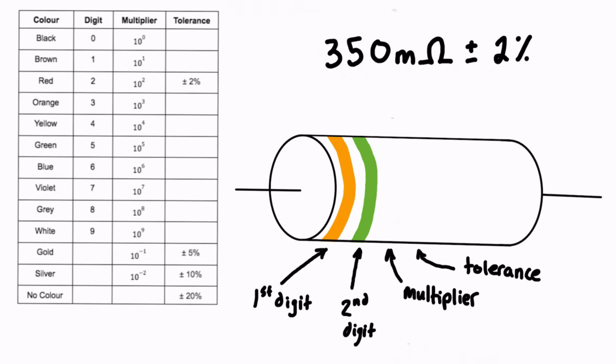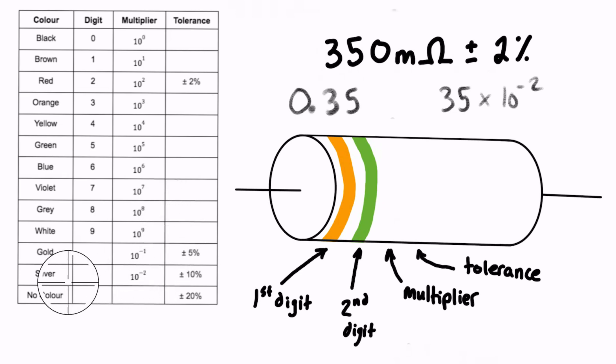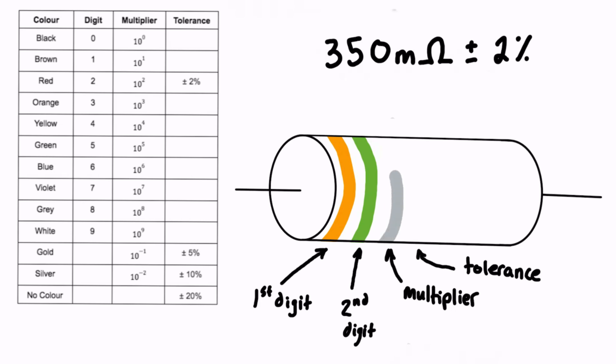350 milliohms is 0.35 ohms. We know our two digits are 3 and 5, so what do we have to multiply 35 by to get 0.35? That would be times 10 to the minus 2 — that moves the decimal place two places to the left. Looking for a multiplier of 10 to the minus 2 in the table, it's labeled with the silver color, so we draw on silver.